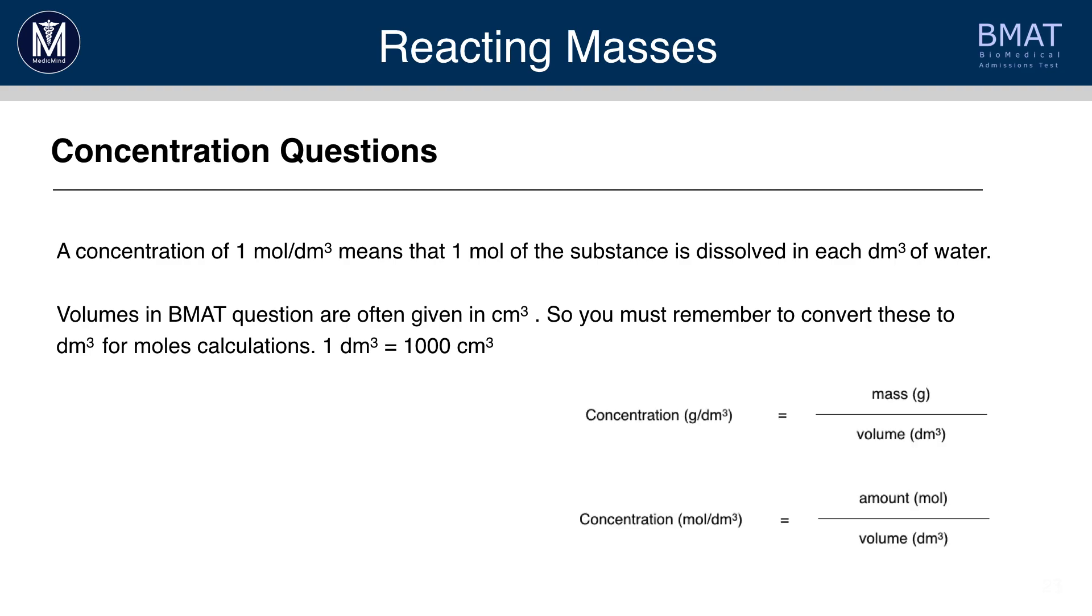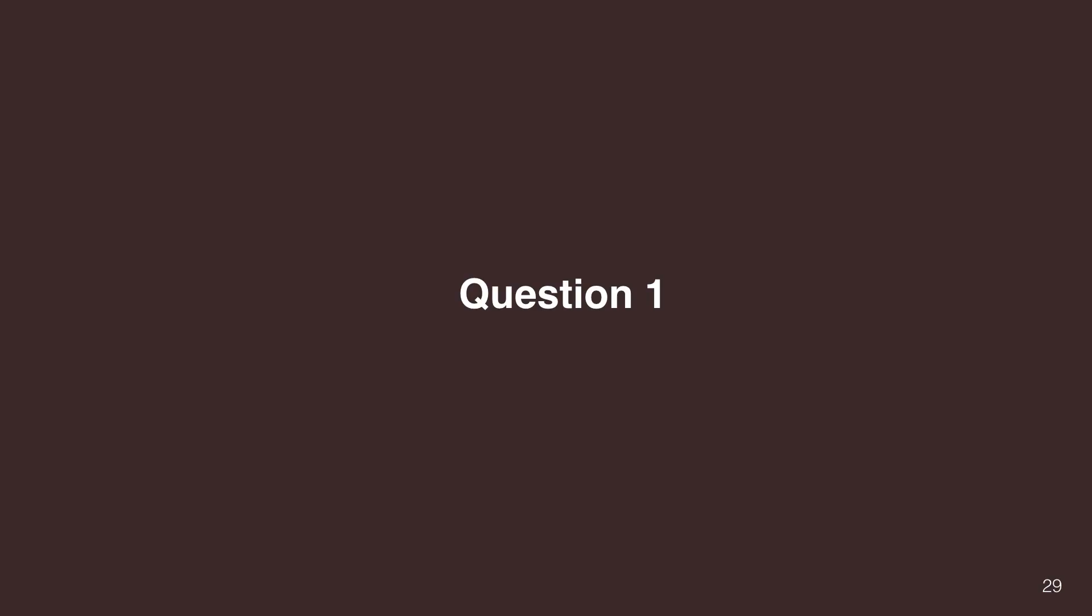So, these are the two important equations. The concentration in grams per dm cubed or the concentration in moles per dm cubed. So, the concentration in grams per dm cubed is equal to the mass divided by the volume. So, concentration in moles per dm cubed is equal to the amount in moles over volume. Let's do some practice.